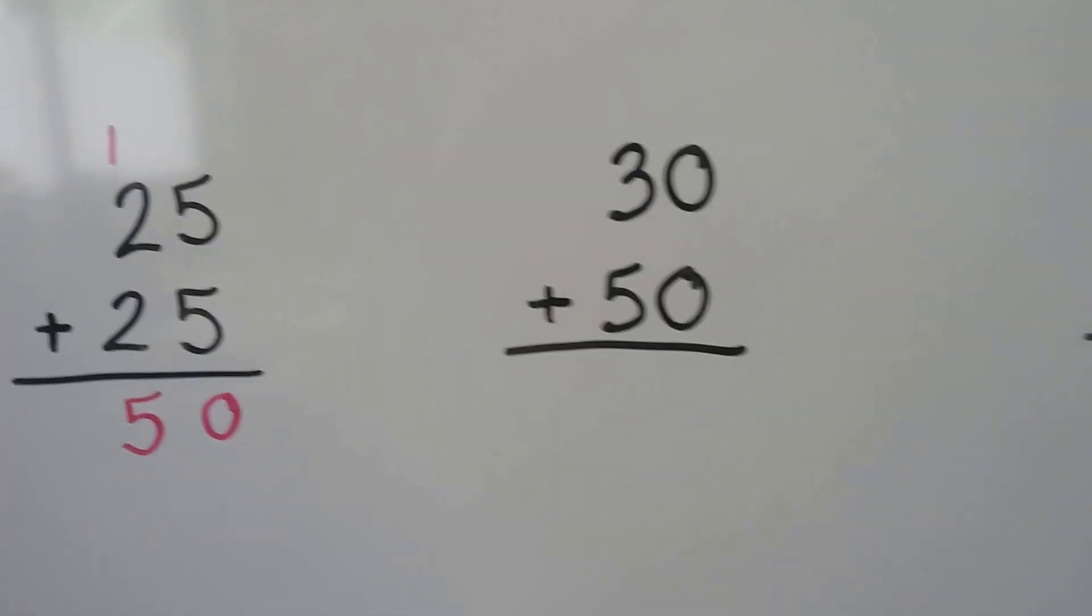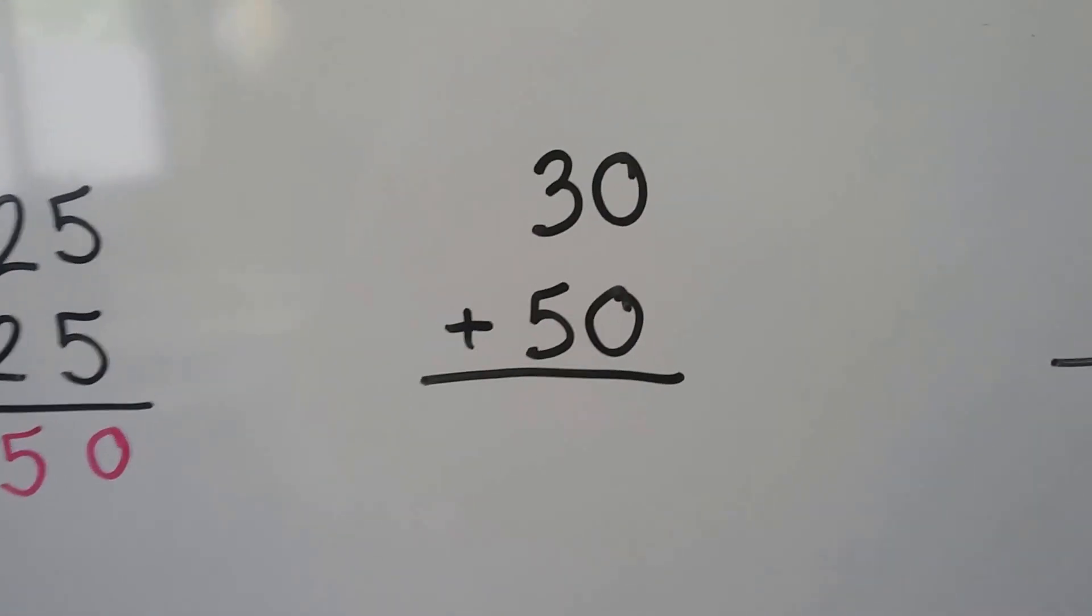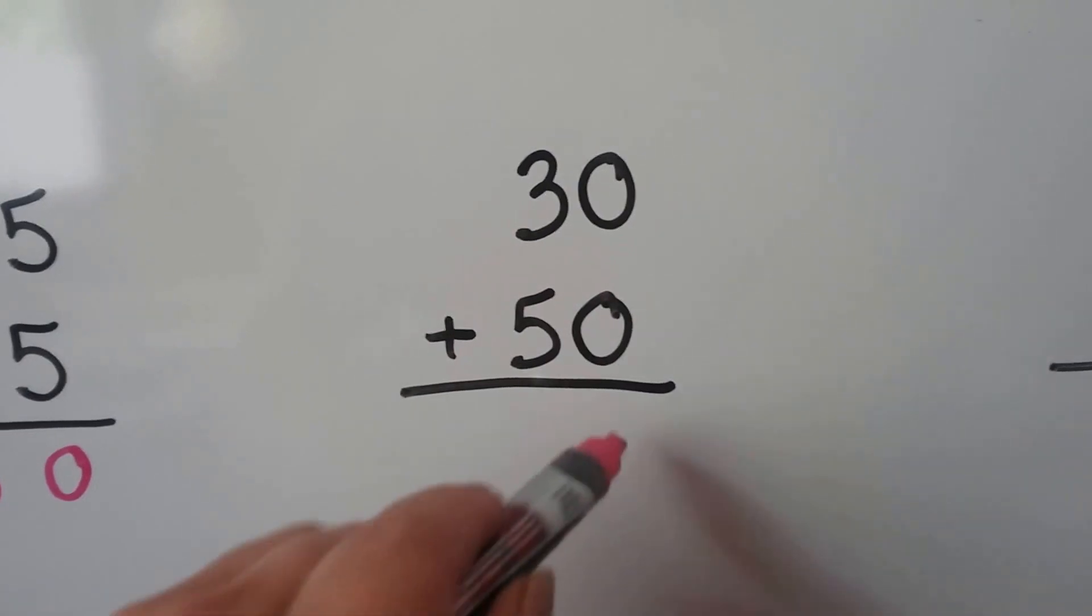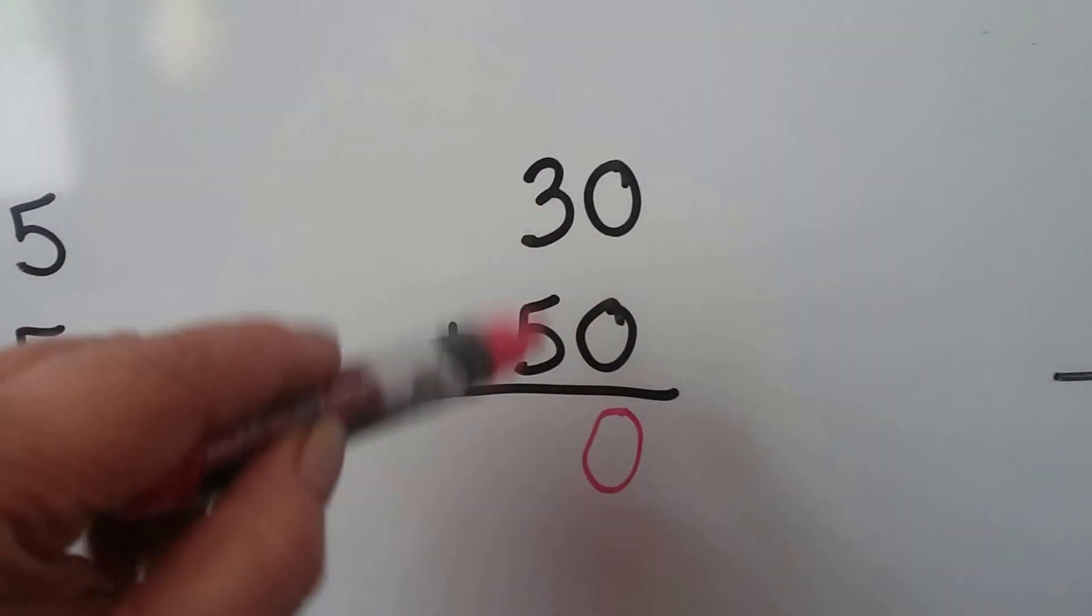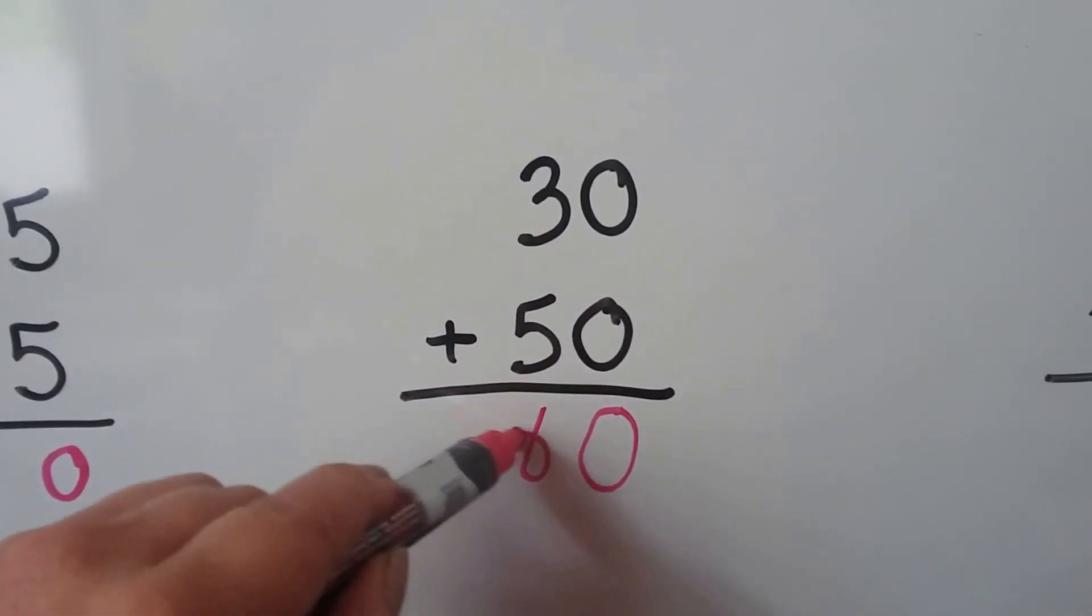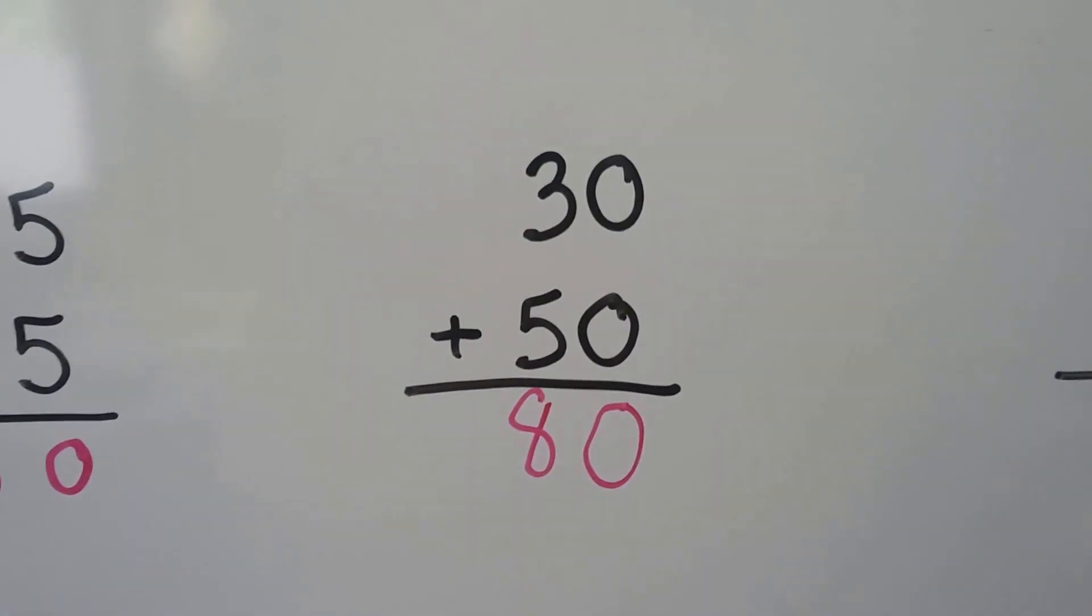Let's try this one. We start with the ones place. We have 0 plus 0. 0 plus 0 is 0. Now we add the tens place: 5, 6, 7, 8. 30 plus 50 is equal to 80.